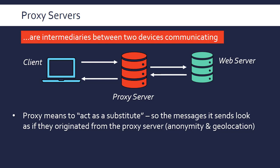On the way back, the proxy server takes the message from the web server and forwards the contents back to the client. A consequence is that all messages reaching the web server appear to come from the proxy server — there's no way for the endpoint to figure out that it originally came from the client. This can be utilized for anonymity: there's no way of knowing who the original person is, especially if you encrypt your messages to the proxy server.